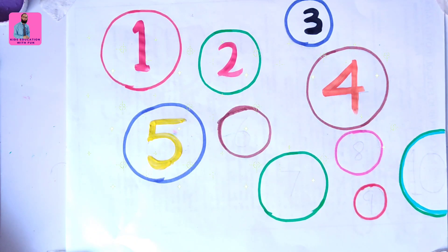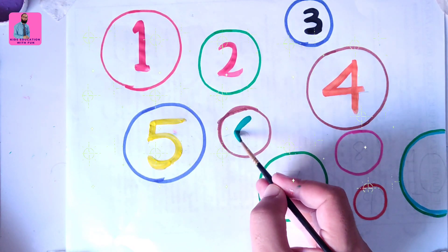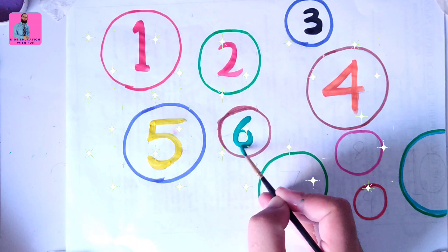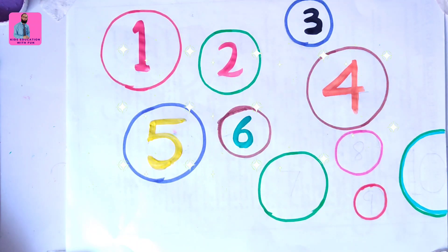And then number six, I will choose dark green color. Number six, this is number six. And now violet color for number seven. Here we have violet color.